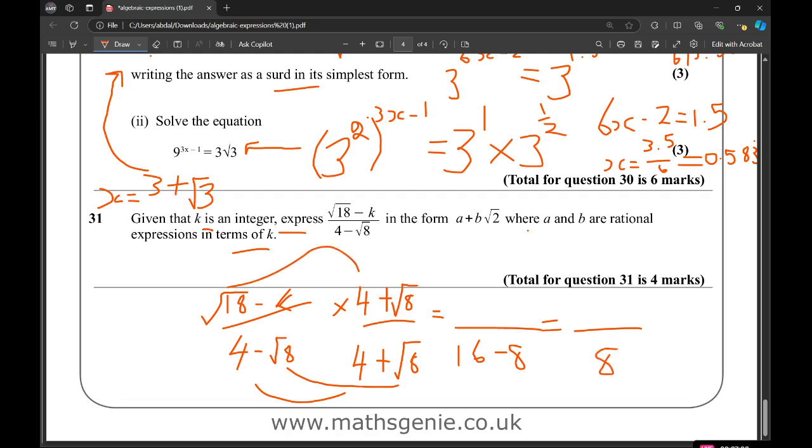Then I'm going to have root 18 times 4, so 4 root 18. Root 18 times root 8, slightly more tricky. A little trick: double it and then double it and then double it again. So that'll be root 36, root 72, and then root 144 if I'm not mistaken. Then we've got minus K times 4, so that'll be minus 4K. And then minus K times root 8, that'll be minus K root 8.